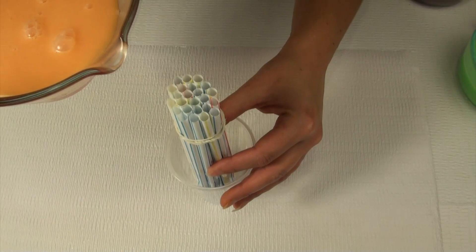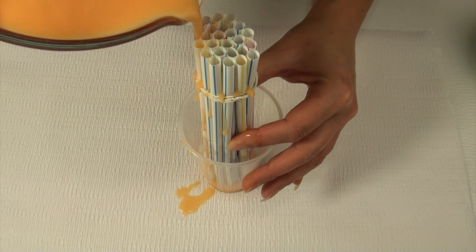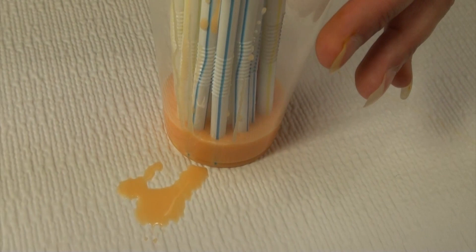Once your straws are prepped and they are in your cup, you can take your mixture. I would recommend putting this in a measuring cup just to make it easier to pour, and then pour about a quarter of your mix into your straws. Do this slowly. You're definitely gonna make a little bit of a mess, but if you do it nice and slow you can kind of cut down on that mess a little bit.